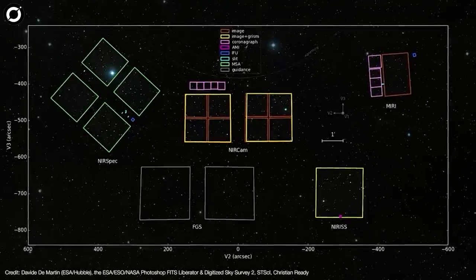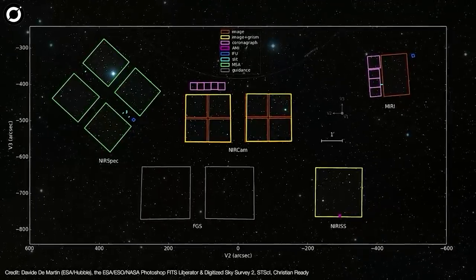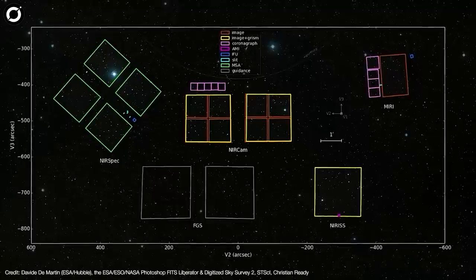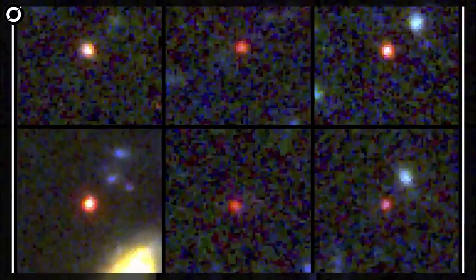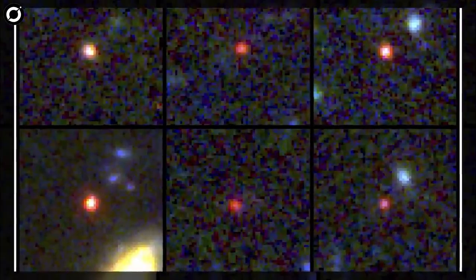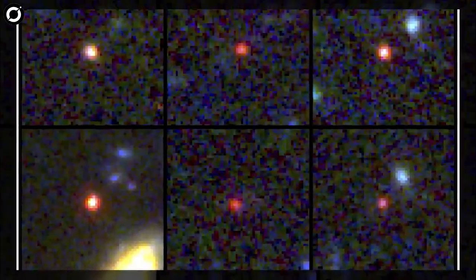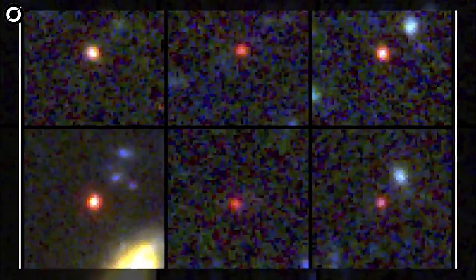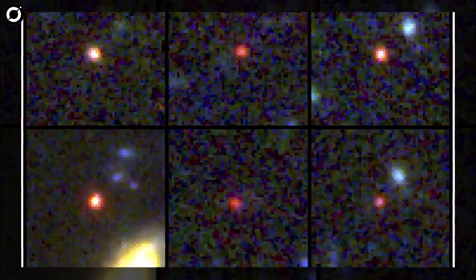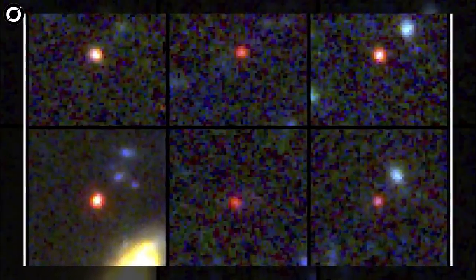The James Webb Space Telescope's powerful cameras allow it to peer back in time to the earliest stages of the universe. It recently discovered six massive earliest galaxies that are possibly the oldest. This requires us to rethink and reassess our cosmological theories.